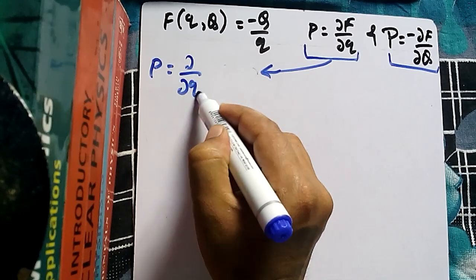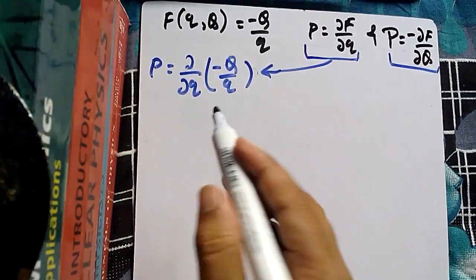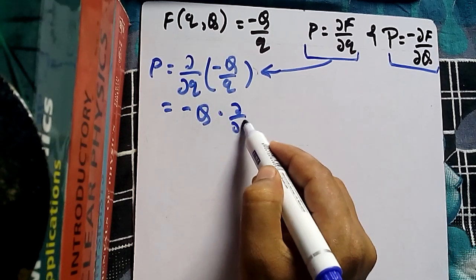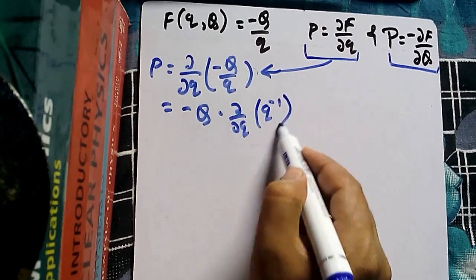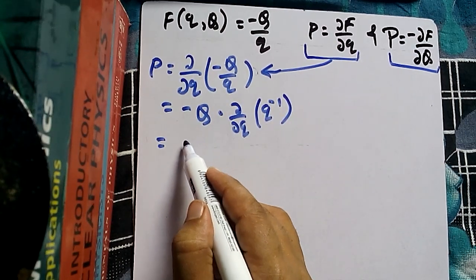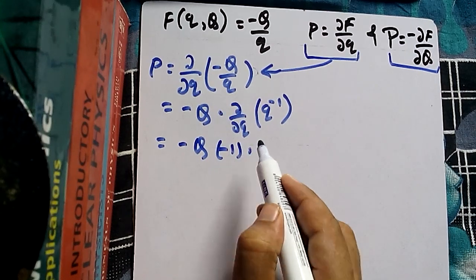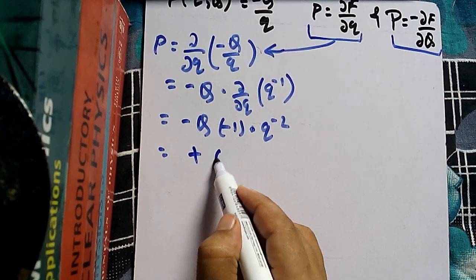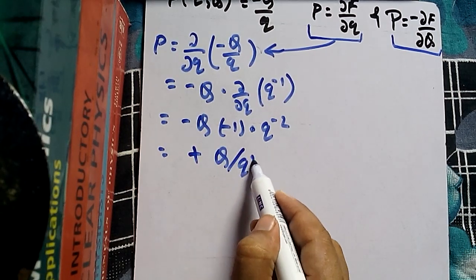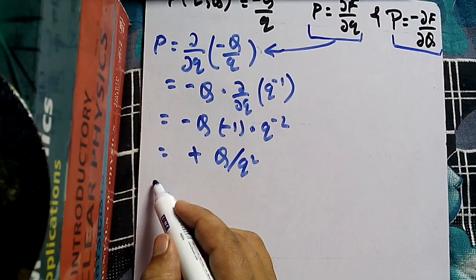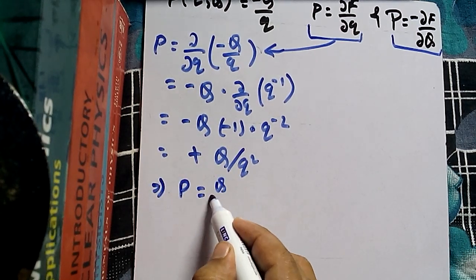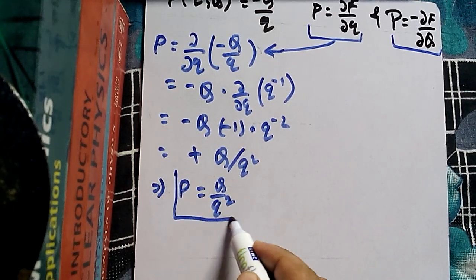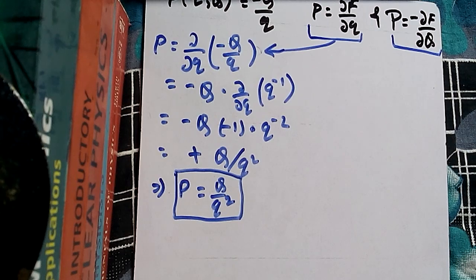From the first formula, small p equals del by del small q of (minus capital Q divided by small q). Since capital Q is constant here, differentiating Q to the power minus 1 gives minus 1 times Q to the power minus 2, so the result is: small p equals capital Q divided by small q squared.